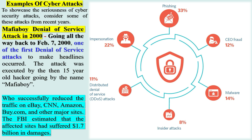WannaCry in 2017: This ransomware attack encrypted computers, demanding Bitcoin to unlock the files. It affected critical organizations such as the NHS in the UK. The particularly critical part was that it spread via a vulnerability in Windows discovered by the U.S. National Security Agency, which cyber criminals utilized to orchestrate the devastating attack.